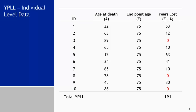Here is a quick demonstration for calculating YPLLs using individual-level data. Each row in this table is one person who died; the age at death is in the second column and the chosen endpoint age of 75 is in the third column. Years lost are estimated as the endpoint age minus the age at death. Those who died at ages older than 75 have zero imputed for their years lost. The years lost are added up for a total YPLL of 191 years in this population of 10 individuals.